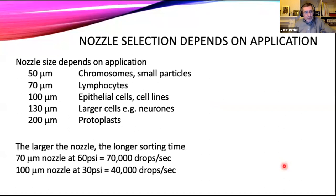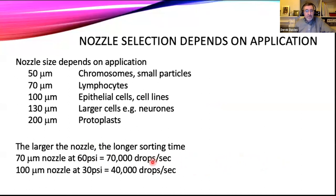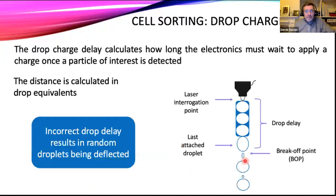If we get a blockage, if we're lucky we can be up and running again in five to ten minutes; if we're unlucky we might have to take the nozzle off, clean it by sonication, put it back on, realign the cytometer, and so on — it could take an hour. So we want to avoid clogging at all costs. The bigger the nozzle size, the longer sorting will take because we produce fewer drops. A 70-micron nozzle running at 60 psi — and that's a big difference between sorters and analyzers, which generally run at five to six psi — can make maybe 70,000 drops per second. The bigger the nozzle, the fewer drops per second.